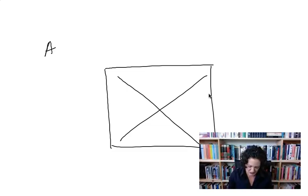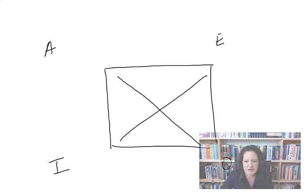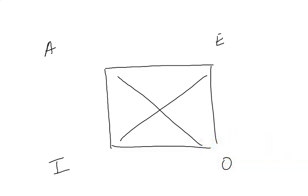If you recall, A is here, E, I, and O. So, now, each of these, you know what, I'm going to get rid of this for a second so that you can see this. I'm going to take myself off the screen. Okay, A, E, I, and O.